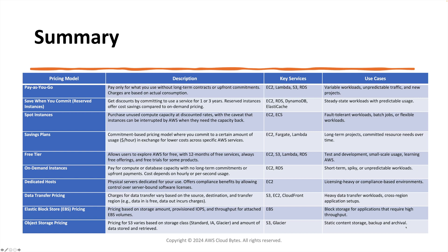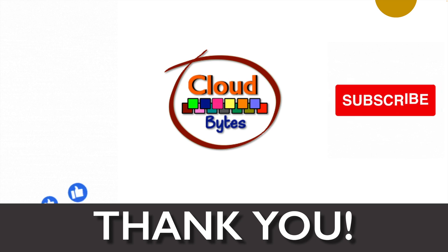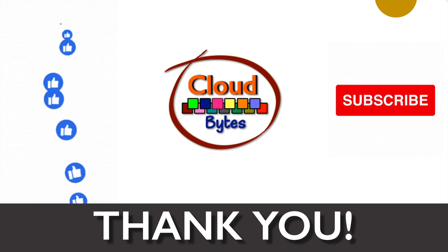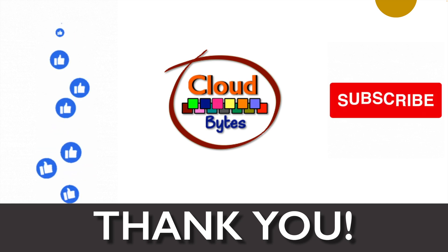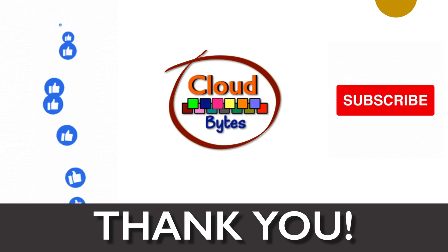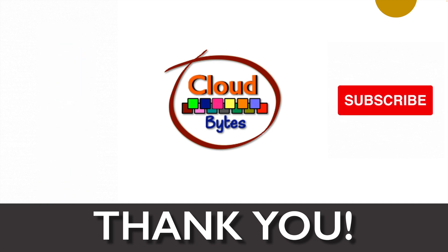That's the summary of various AWS pricing models. The bottom items like EBS and data transfer are not exactly pricing models per se, but I wanted to give you some insight. The primary pricing models we discussed are reserved instances, savings plans, spot instances, on-demand, and free tier. That's all for this video — please like, share, subscribe, and press the notification bell for future updates. This is your host Bhavesh Kumar, signing off. Thank you so much.